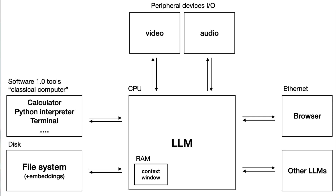Before starting, I wanted to quickly show you what Andrei Karpathy actually mentioned, and then see how we're going to try to build that. So this is Karpathy's vision: you have the LLM at the center — you can call it the kernel — where everything is managed. You have RAM as short-term memory, which is the context window. Then you have disk storage, a file system, a bunch of tools, input/output peripheral devices, an internet browser, and connections to other LLMs and software pieces.